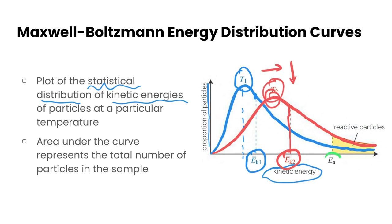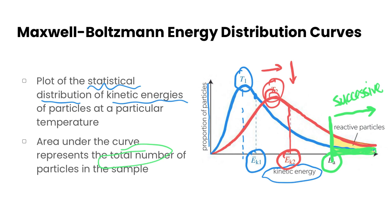We can also plot activation energy on the curve. Say the activation energy is at a particular point — anything beyond this point represents a successful collision, meaning the particles have enough energy for the reaction to occur. We also need to remember that the right orientation is required as well. The area under the curve represents the total number of particles in the sample, and specifically the area under the curve beyond the activation energy gives us the number of particles that will have enough energy for successful collisions.